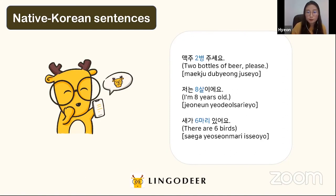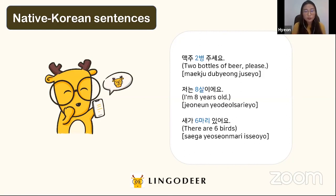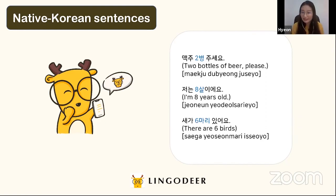If you're wondering what 병 or 마리 are — those are counters, and Korean has many of them for different things. For example, 병 is the counter for bottles and 마리 is the counter for animals. That's a great topic for another lesson. So that's how you use Sino-Korean and Native Korean numbers — you just have to remember which case requires which system.